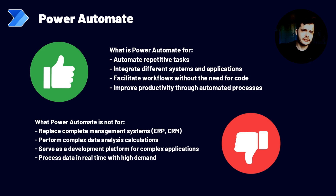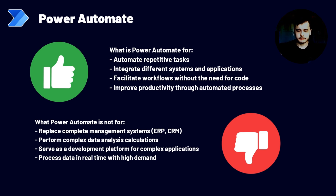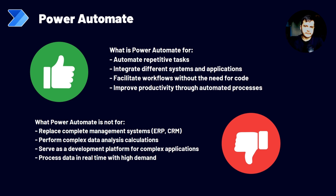Usually what I like to say is that Power Automate should be used for something that you can do manually, but you want to automate. If you want to automate something that would run thousands of times during the day, you cannot do that manually — so you cannot automate it with Power Automate, and you may need something else dedicated to that purpose. In the next lesson, we are going to see what the types of Power Automate flows are and some scenarios where you can use them. See you in the next lesson.